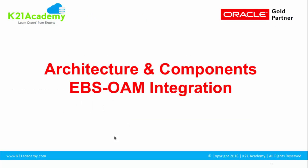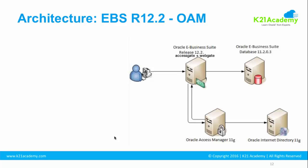Now let's look at the architecture in this lesson. There is a slight difference between the EBS 12.2 integration architecture. If you see, this is the user on the left-hand side, this is Oracle eBusiness Suite R12.2 application tier, and this is the Oracle eBusiness Suite database. In a typical non-single sign-on environment, the user will try the EBS R12.2 URL and EBS will present a username and password prompt, which gets validated against the FND user table.